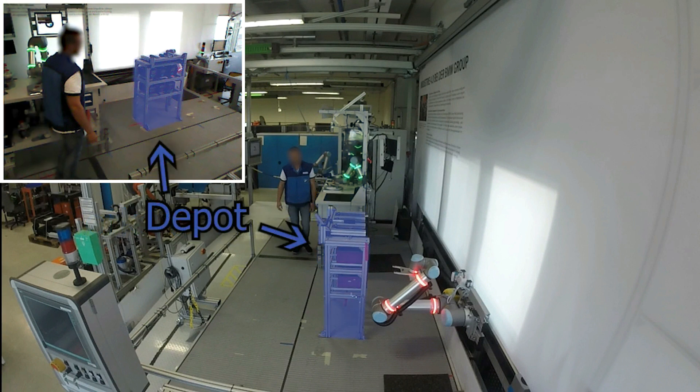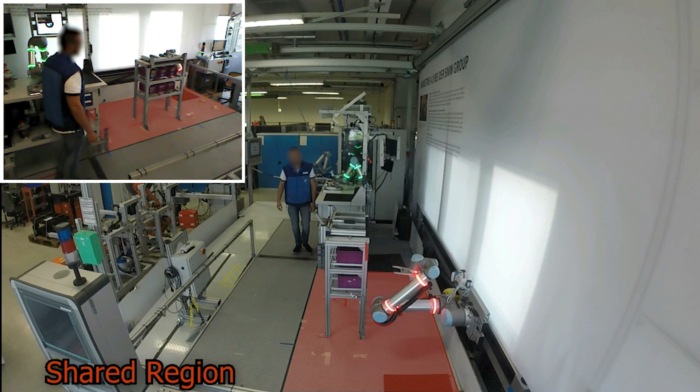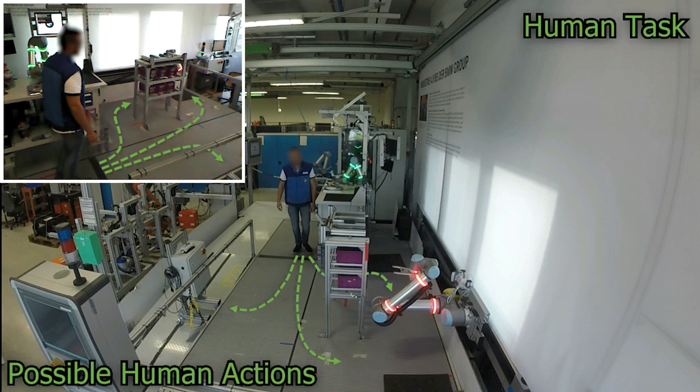In these demonstrations, the robot delivers parts from the depot to the workstation, while the human performs tasks in the shared environment. The human could select any motion corresponding to a predefined set of tasks.